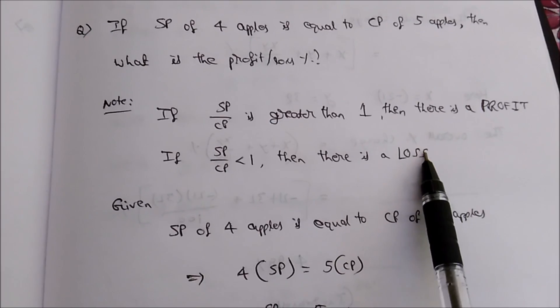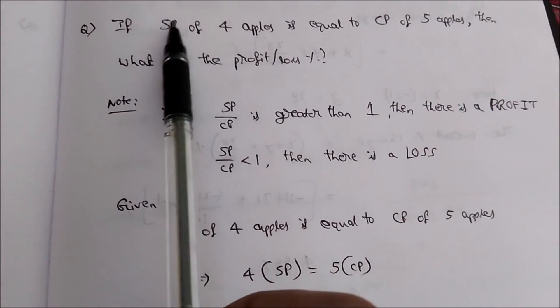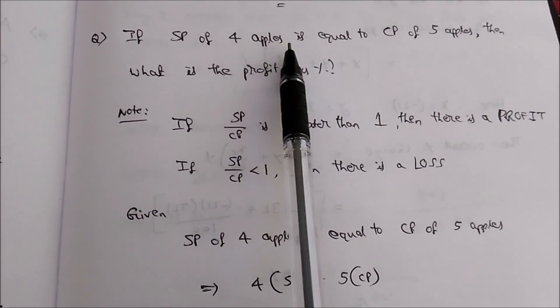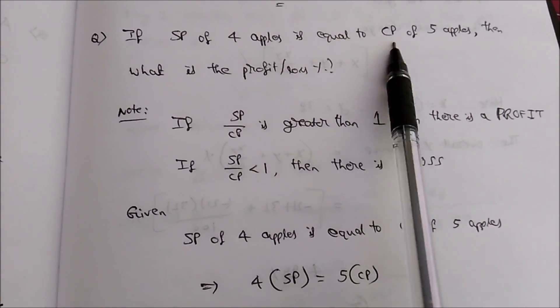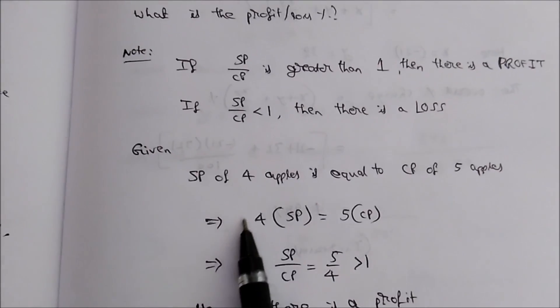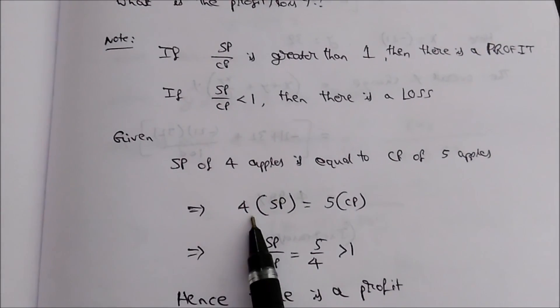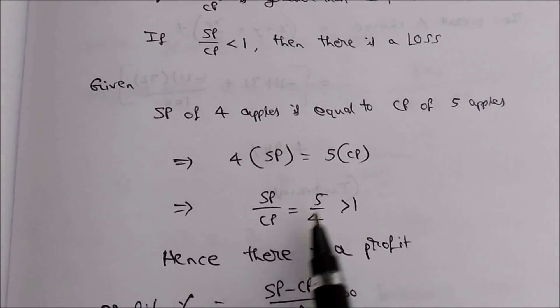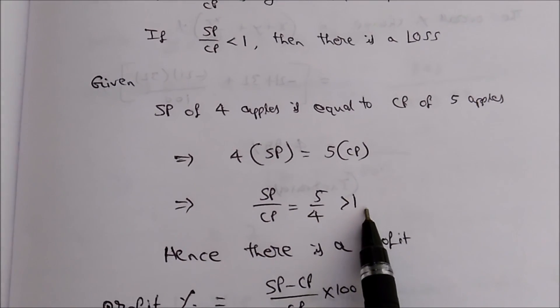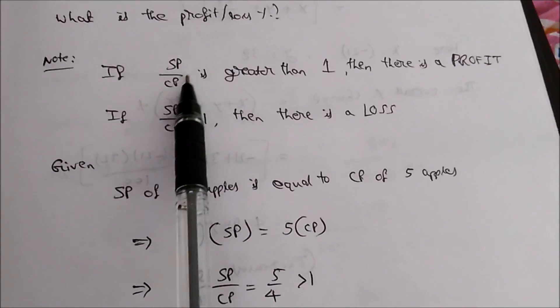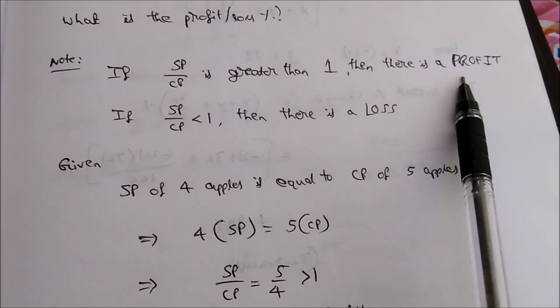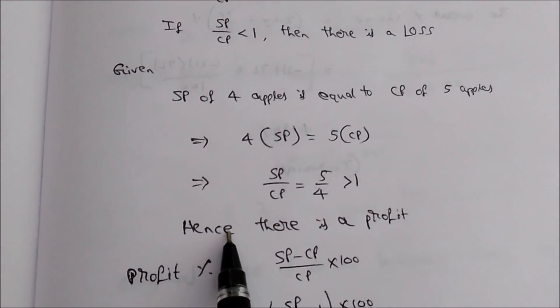If selling price by cost price is less than 1, then there is a loss. Now consider the given statement: selling price of 4 apiece equals cost price of 5 apiece, that is 4 × SP = 5 × CP. So selling price by cost price becomes 5/4, which is greater than 1 — hence there is a profit.